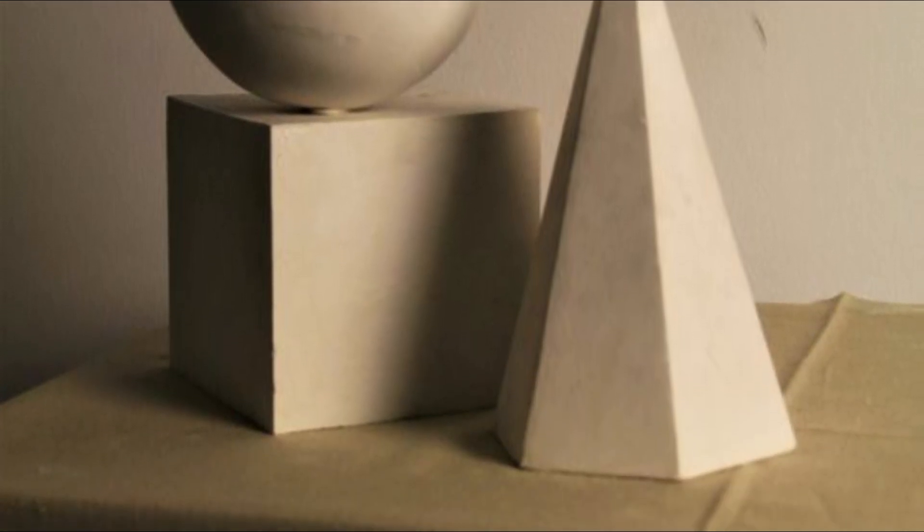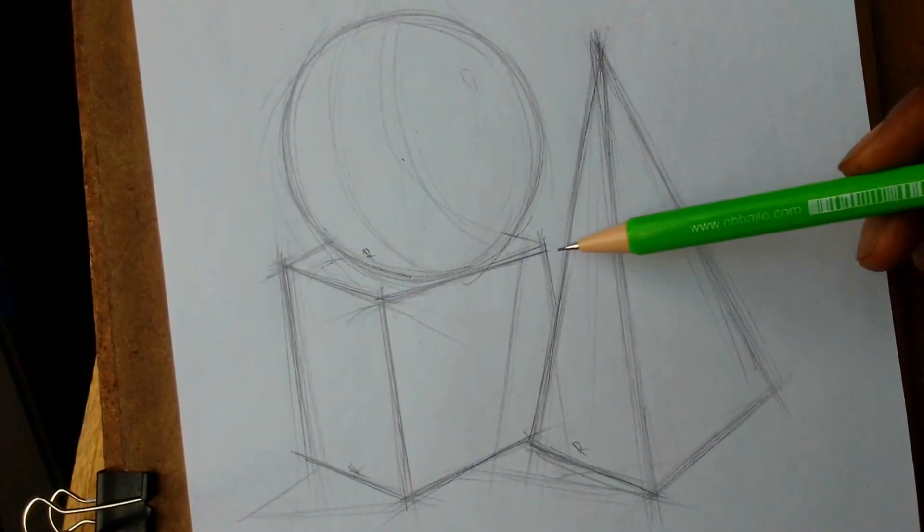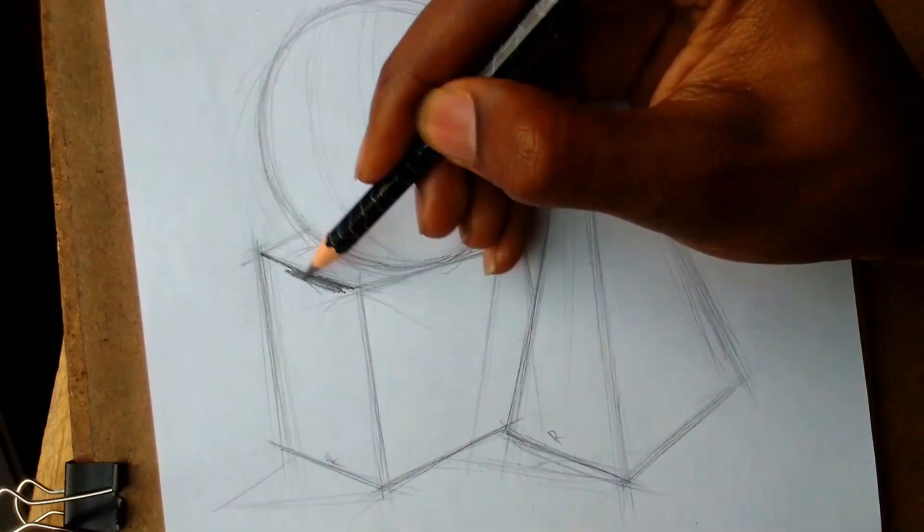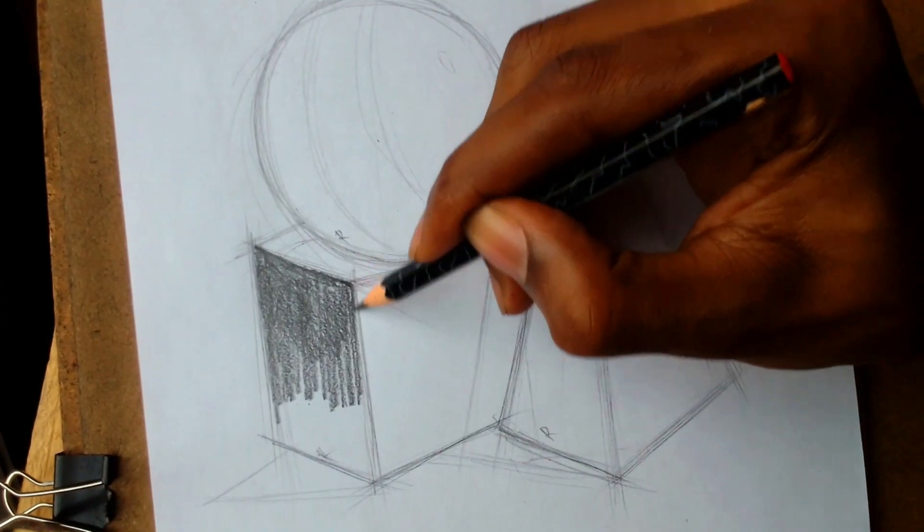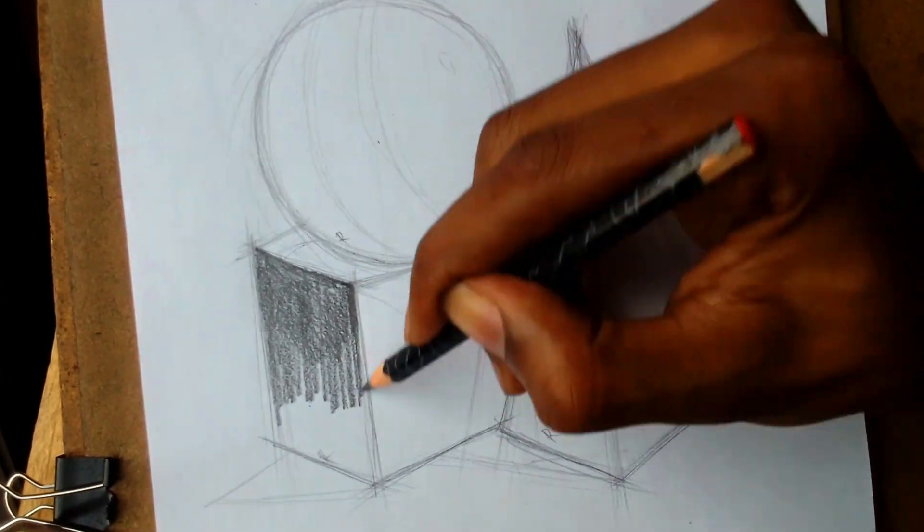So now that we have all that information gathered, let's try and shade these three objects right here. First, what I like to do is layer my pencil down using that 4B pencil. I just layer down, starting with the shadows.